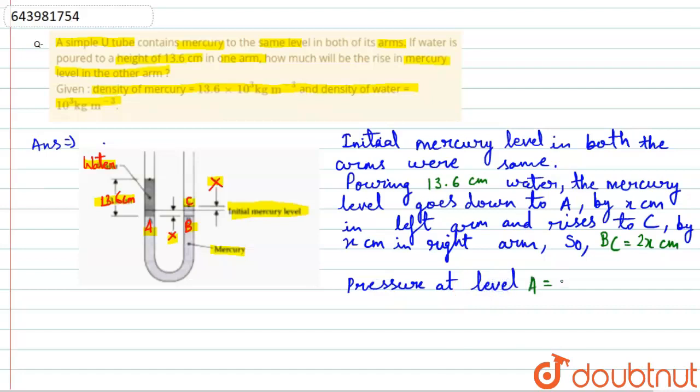level A equals pressure at level B, or 13.6 × 1000 × g = 2x × 13.6 × 10³ × g